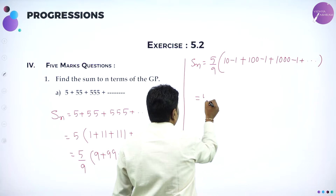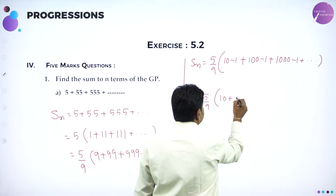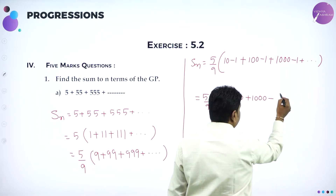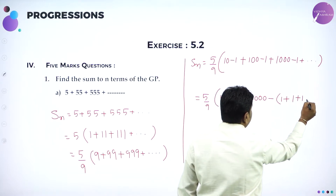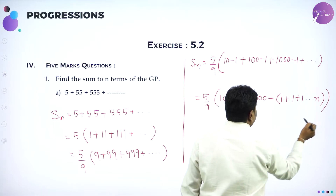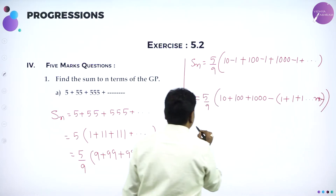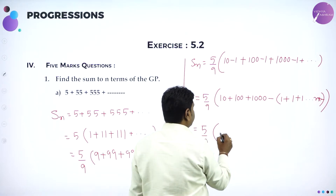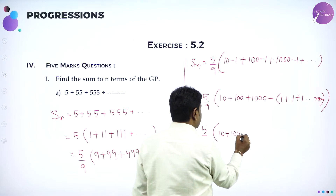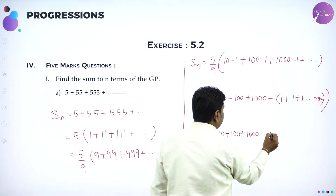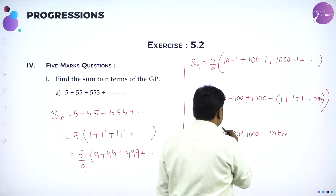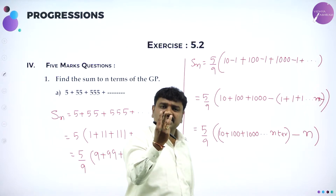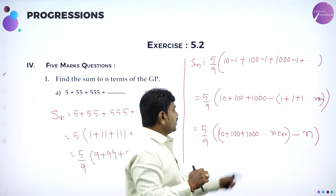So now I can write this as 5 by 9. I group: 10 plus 100 plus 1000 till n terms. And here we have minus 1, minus 1, minus 1 — take common — it becomes 1 plus 1 plus 1 till n terms. 10 plus 100 plus 1000 are in GP. And 1 plus 1 plus 1 added n times gives n.